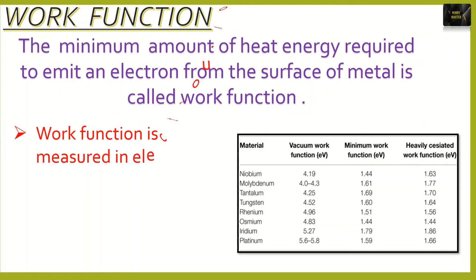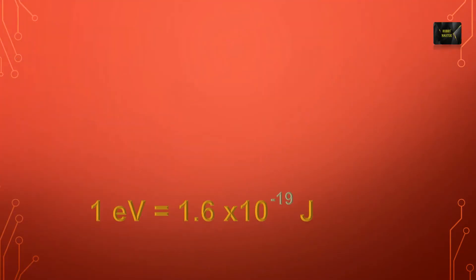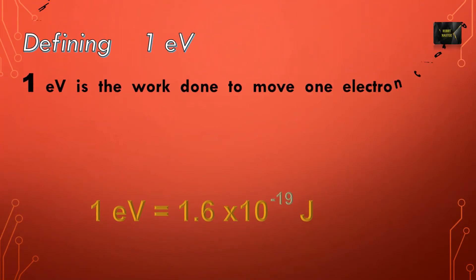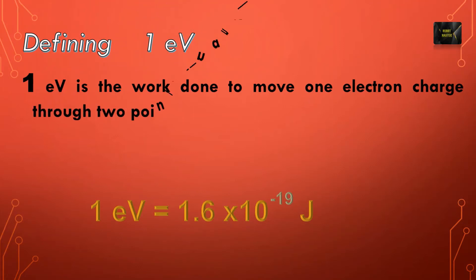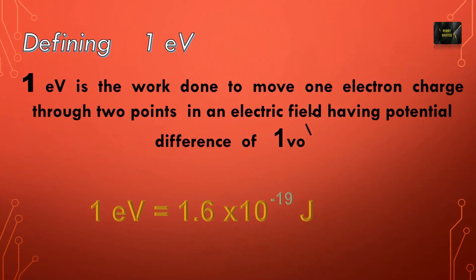Here are the basic things you should remember about work function. It is always measured in electron volts and work function is also known as threshold energy. 1 electron volt is the work done to move 1 electron charge through 2 points in an electric field having a potential difference of 1 volt. So, 1 electron volt is equal to 1.6 × 10⁻¹⁹ joules.